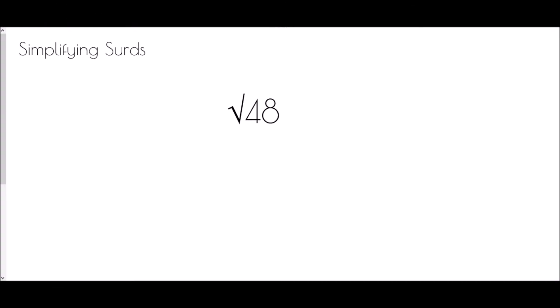Next we're going to look at simplifying surds — how can we take a very large surd and simplify it down to something a little easier to use? It all comes down to the multiplication method we've just been thinking about. We can split root 48 into two different surds multiplied together, and the key is to find a square number which is a factor of 48.